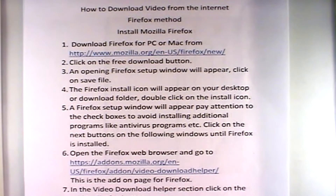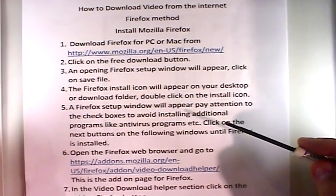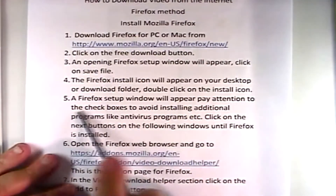At step five you'll be clicking through several windows in the install program. I want you to pay attention to the checkboxes — you want to make sure they are unchecked, because sometimes you'll end up installing things like antivirus programs or other programs you do not want when you're trying to install Mozilla Firefox. Once you go through all that sequence of windows and click through, you end up with Firefox being fully installed.